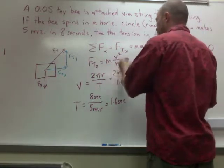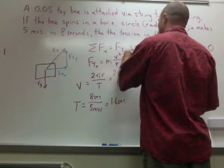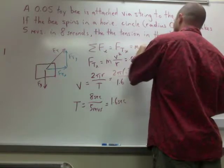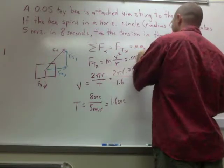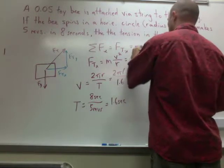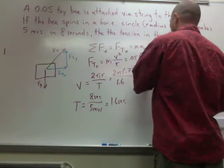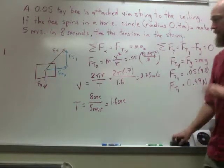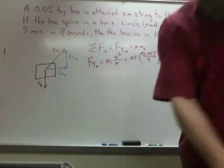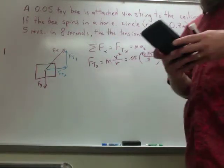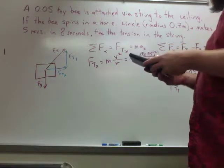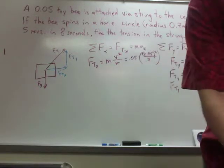And then, we've got to plug it back in up here. So, you get 0.05 times 2.75 squared divided by 0.7. And then, solve. So, I'm going to erase this just to clean it up a little bit. Let me do the math. This number squared times 0.05 divided by 0.7. And then, you get 0.54 newtons.